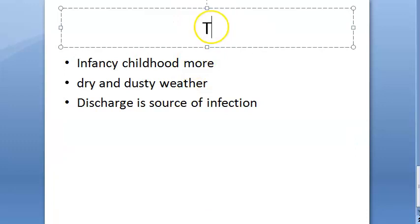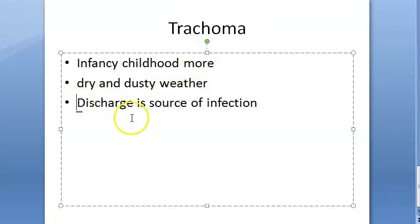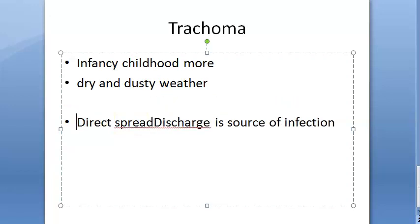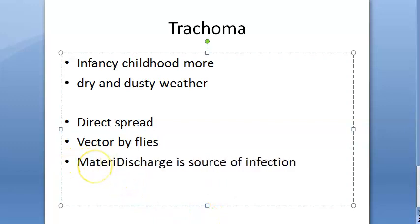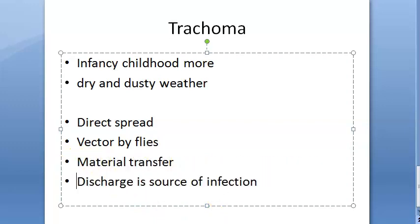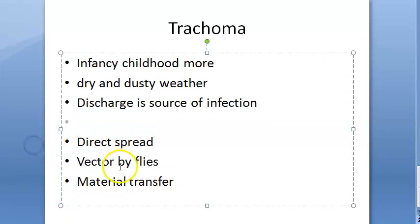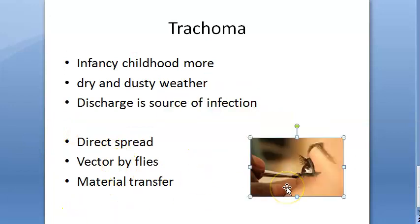Trachoma spreads through direct spread, airborne and waterborne routes, vector transmission through flies, and material transfer — such as sharing towels, handkerchiefs, and beddings. Sharing items like kajal or surma applicators can also spread the infection.